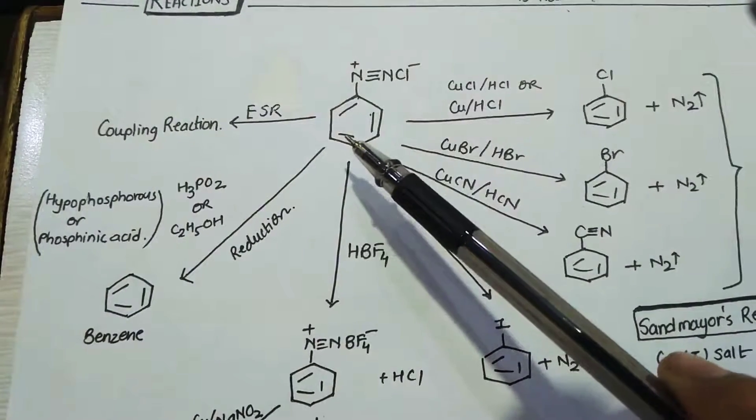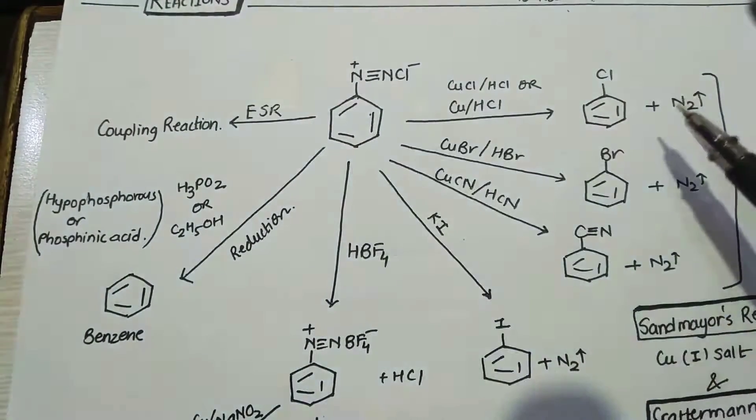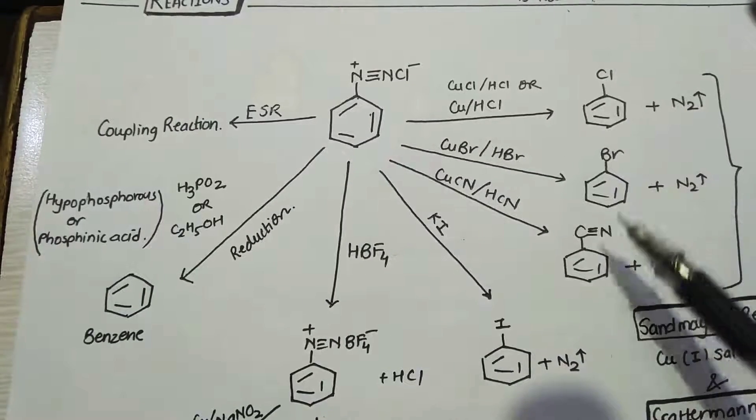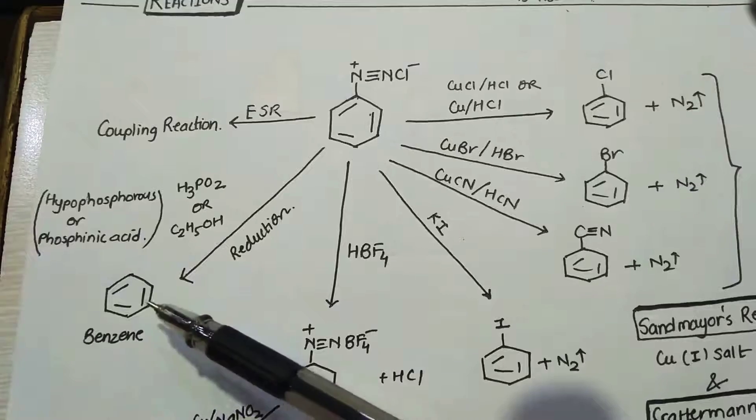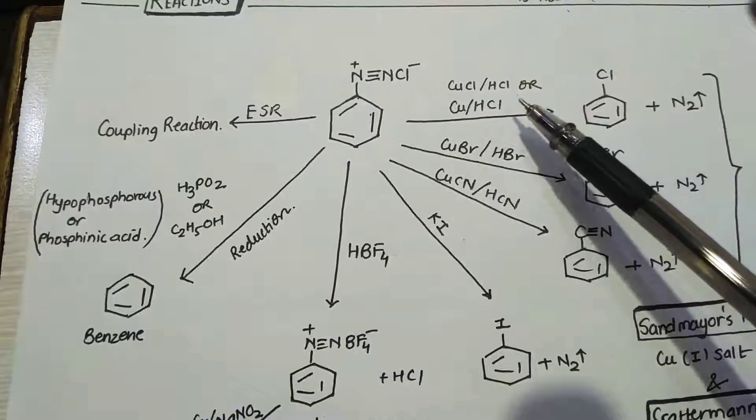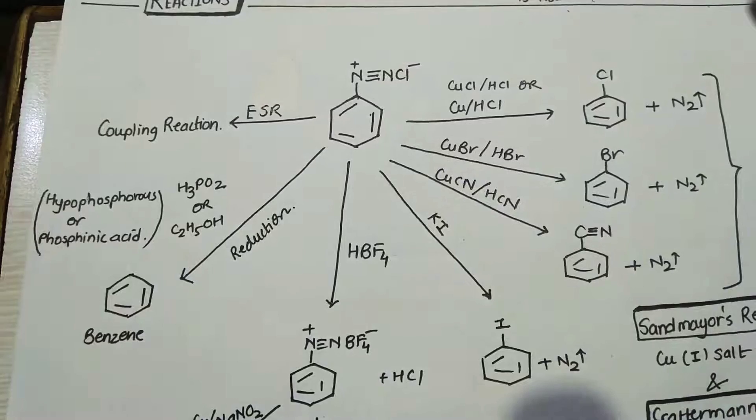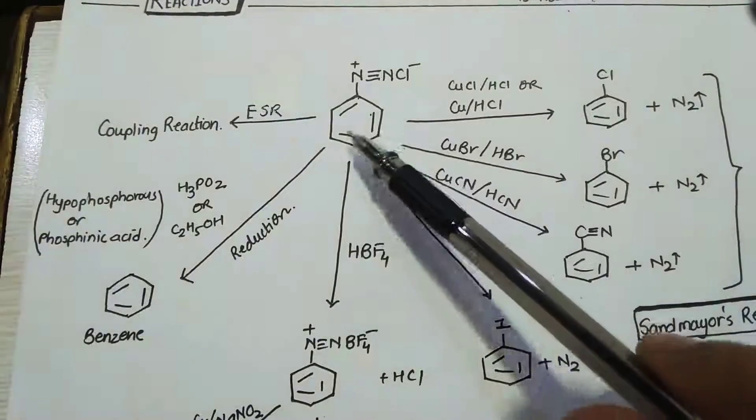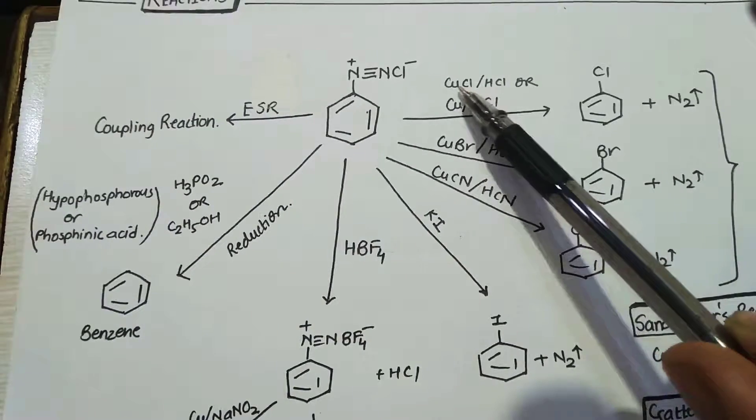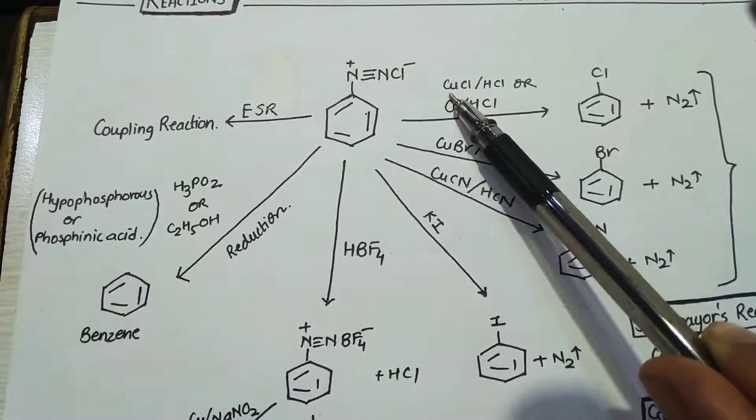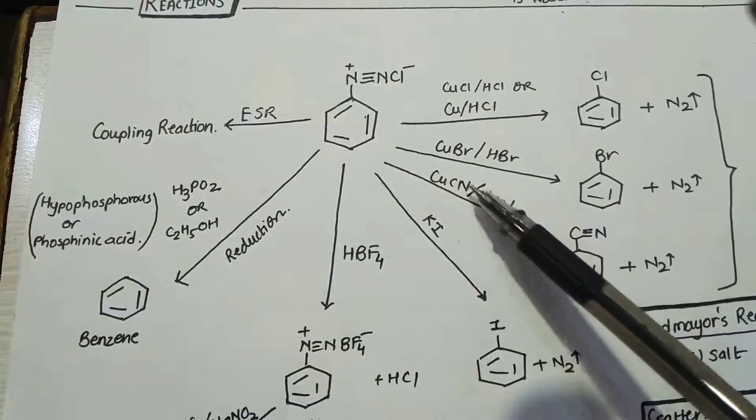Diazonium chloride is an intermediate compound to prepare many compounds like chlorobenzene, bromobenzene, cyanobenzene, iodobenzene, fluorobenzene, nitrobenzene, and so on. So first we will talk about Sand Meier reaction. That is, a benzene diazonium salt when it is treated with copper salt, copper one salt, point to be noted: these are cuprous chloride, cuprous bromide, or cuprous cyanide.